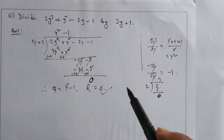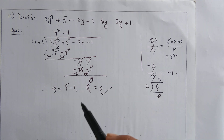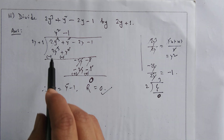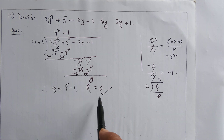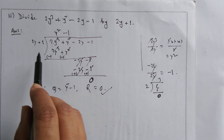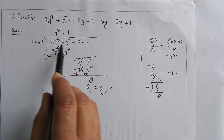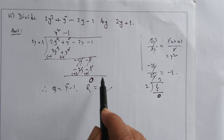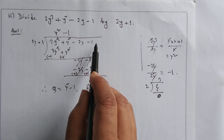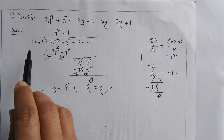So this is how we understand whether one expression is a factor or multiple of another. If remainder is zero, the divisor is a factor of the dividend. If remainder is zero, the dividend is a multiple of the divisor.